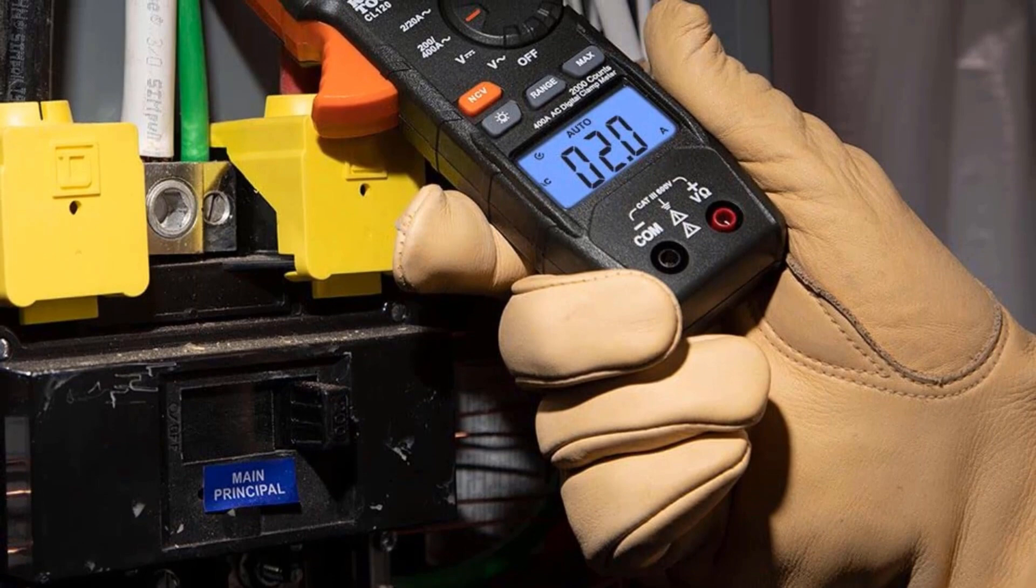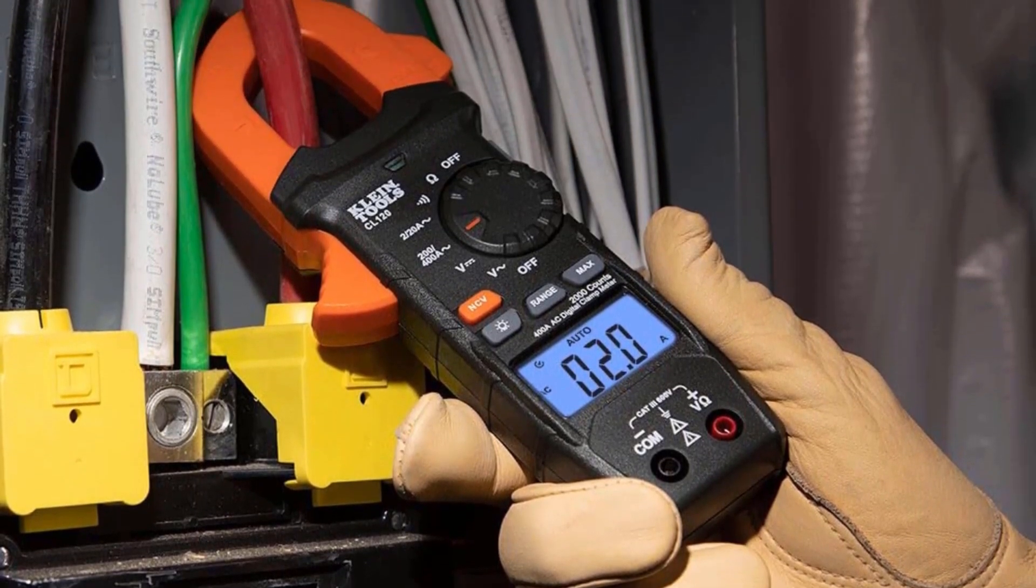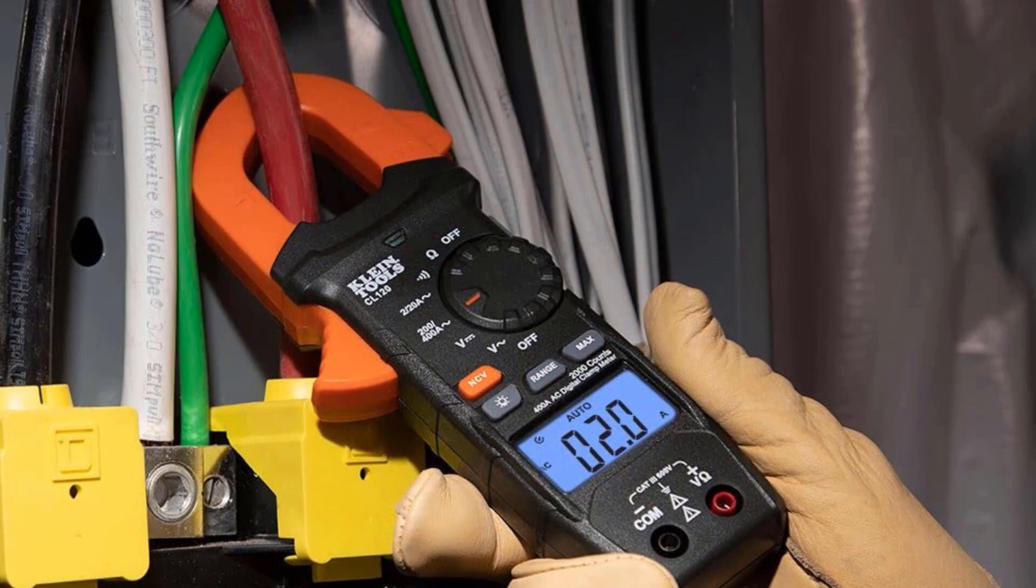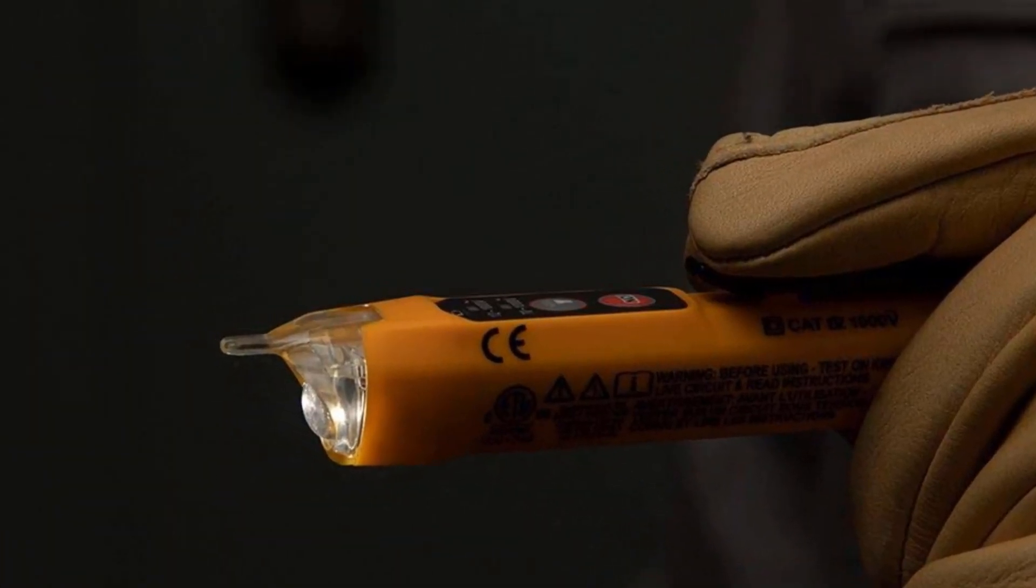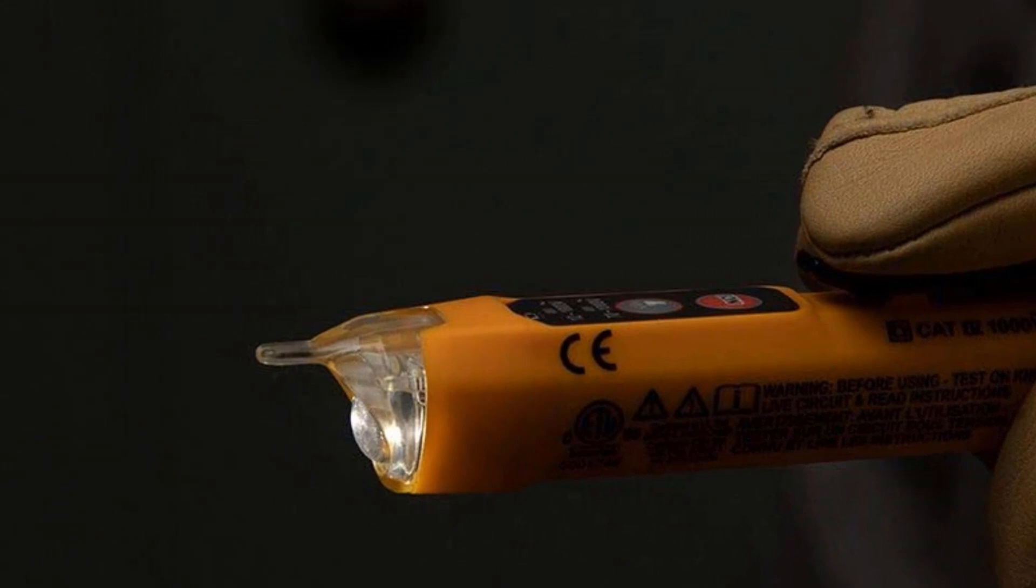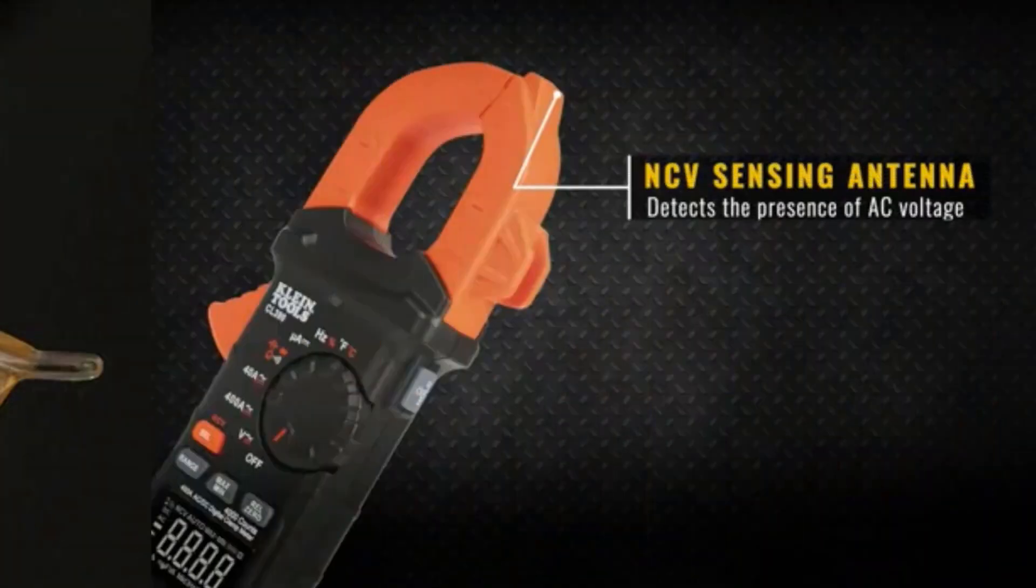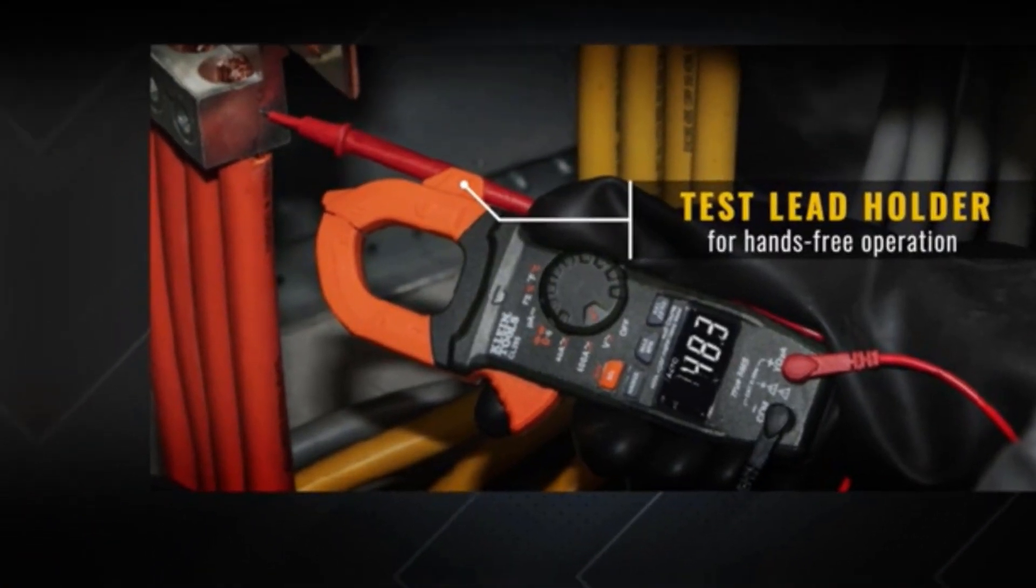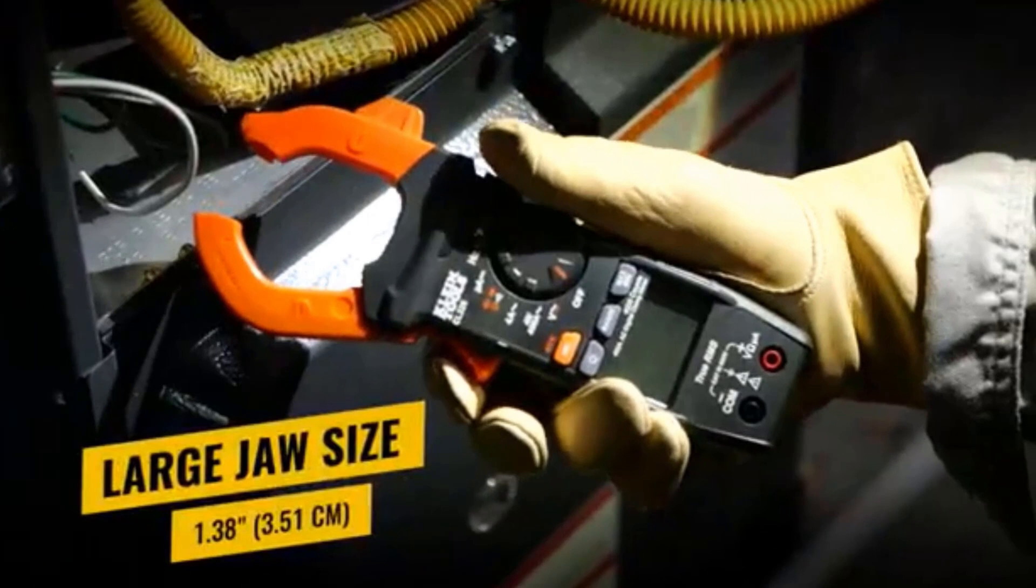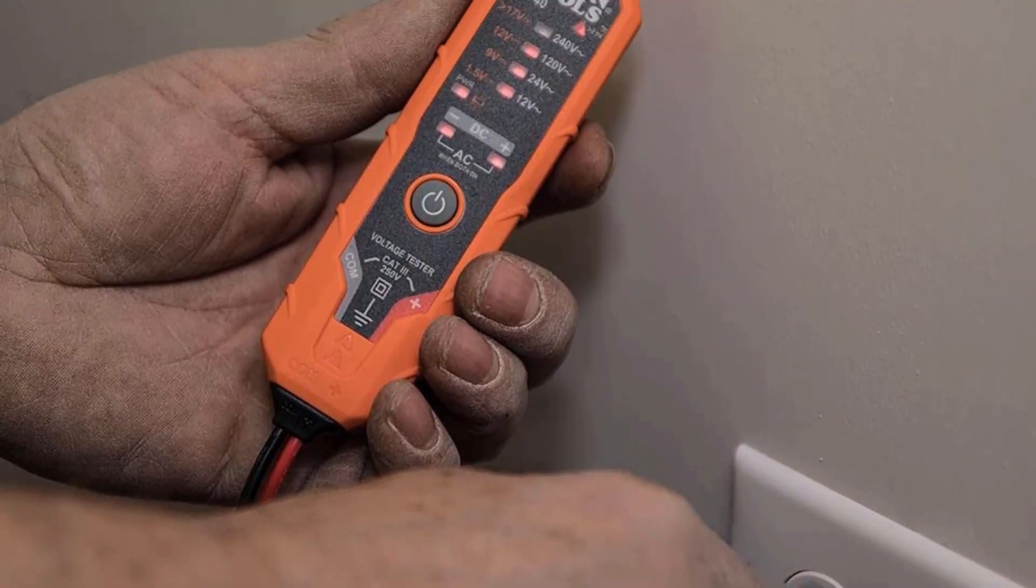The CL120VP measures AC current up to 400A without direct contact, ensuring safety and ease of use. It also measures AC DC voltage up to 600V, resistance up to 4K ohms, and performs continuity testing. Equipped with a backlit display and work light, it ensures clear readings even in dim environments. This clamp meter features a non-contact voltage tester, making it an excellent all-in-one device for electrical troubleshooting.